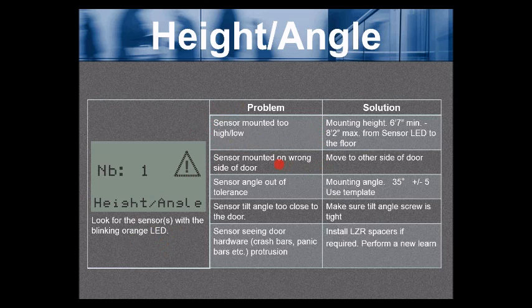If you see the sensor and the arrow is pointing up toward the header, you've mounted the sensor on the wrong side of the door. The next possible problem is the sensor angle is out of tolerance. The mounting angle is 35 degrees, plus or minus 5 degrees. You should be using the template that's supplied with the installation kit. That will ensure you'll be successful in that mounting angle.